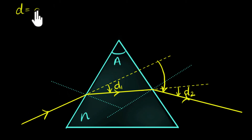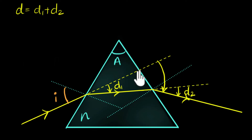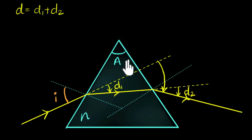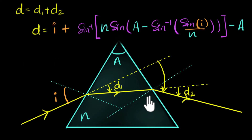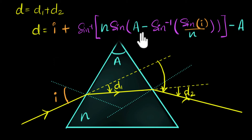So the total deviation D is D1 plus D2. If we call the angle of incidence I and analyze the situation carefully using Snell's law and geometry, it turns out that D1 and D2 only depend on the angle of incidence I, the refractive index N, and the angle of the prism A. We'll do that full analysis in another video. The key point is that the deviation only depends on I, N, and A.